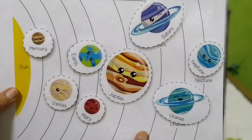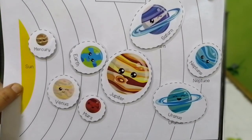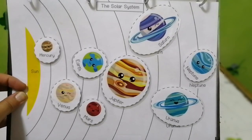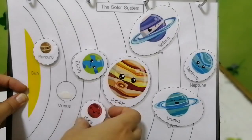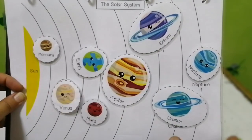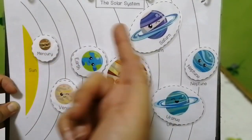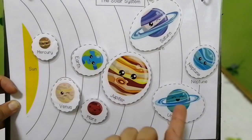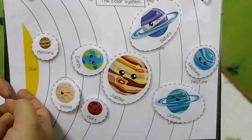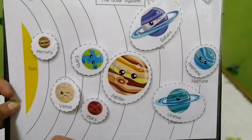This is the solar system — we have eight planets. This is another interesting activity where I use velcro. You can ask which planet is closest to the sun, or how many planets there are altogether, on which planet we live, or which planet is the biggest.